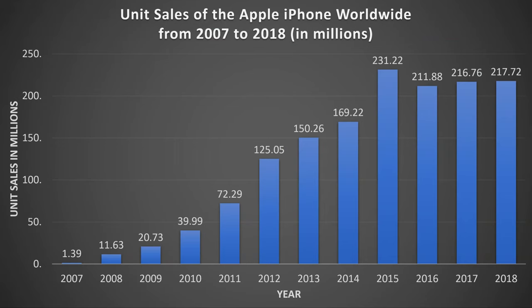Now we will have a look at the product life cycle of Apple's iPhone. The iPhone was introduced to the market in 2007, reporting 1.39 million sales. They hit the growth stage fairly quickly, increasing from 1.39 million sales in their first year to 11.63 million sales in 2008 — that's an increase of 736%.